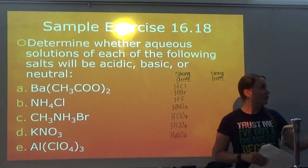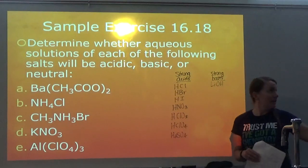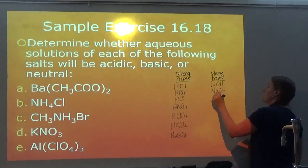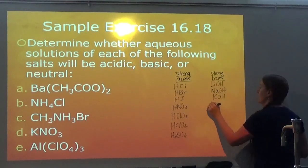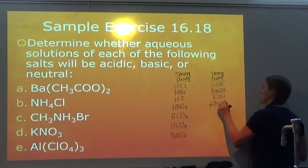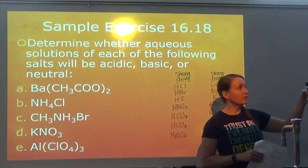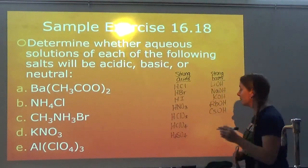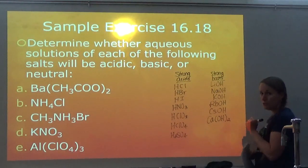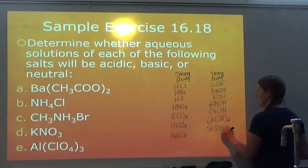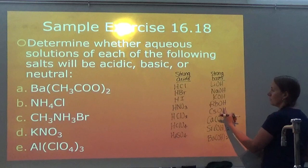There are eight strong bases. Starting at lithium on the periodic table and working down: LiOH, NaOH, KOH, RbOH, CsOH. Then we switch over to Group 2, the alkaline earth metals, going from calcium to barium — but these have a +2 charge, so it's Ca(OH)₂, Sr(OH)₂, and Ba(OH)₂. That gives us eight total.